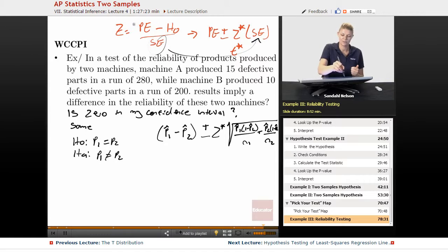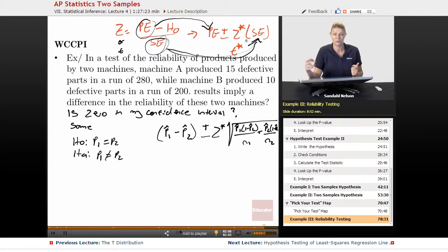We just say I have z as the point estimate, z or t, is the point estimate minus the null hypothesis over standard error. So we can just take these pieces from our hypothesis equation and throw them into the confidence interval. And then we look up our t star or z star, which we should know how to do. So let's do this with this problem.